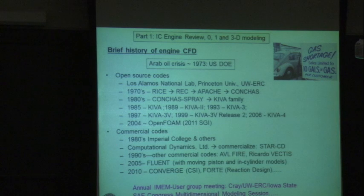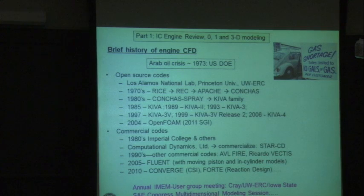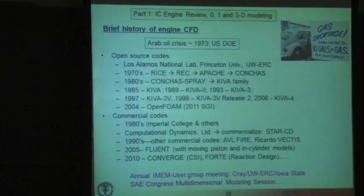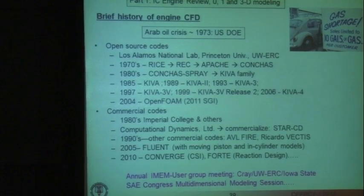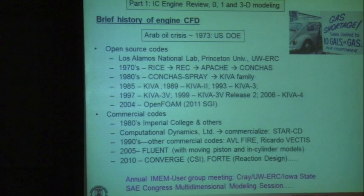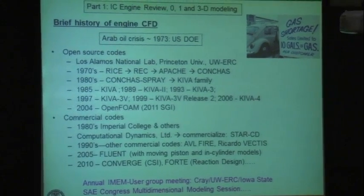Alongside the open-source codes, commercial codes were developed, notably the STAR codes from Imperial College and others including AVL's code, Ricardo's code, Fluent, and more recently Converge and Forte. These commercial codes are widely used in industry, with annual user group meetings associated with the Society of Automotive Engineers congress.